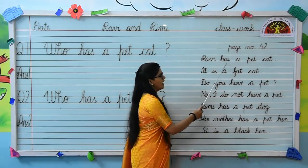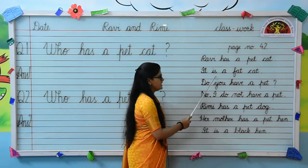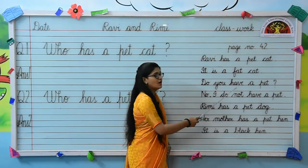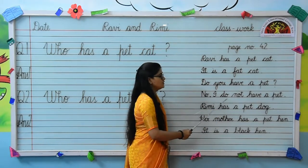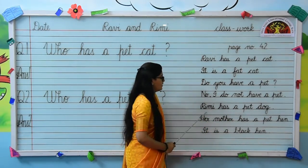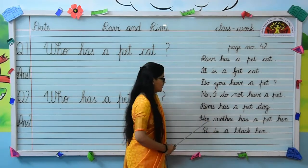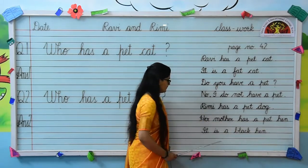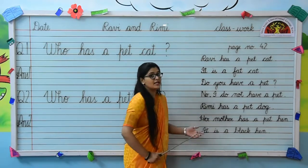Ravi has a pet cat. It is a fat cat. Do you have a pet? No, I do not have a pet. Remy has a pet dog. Her mother has a pet hen. It is a black hen.